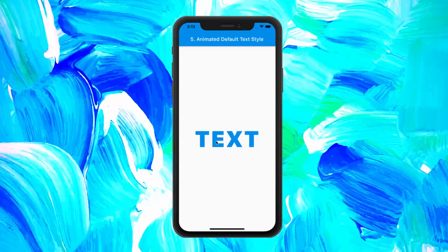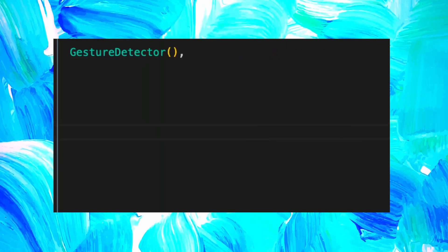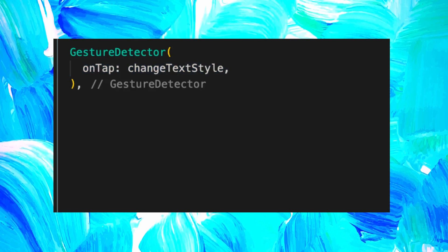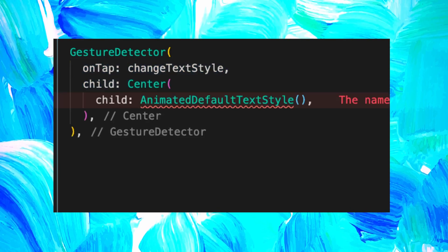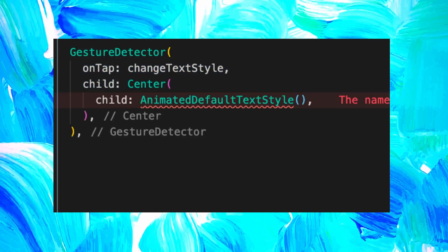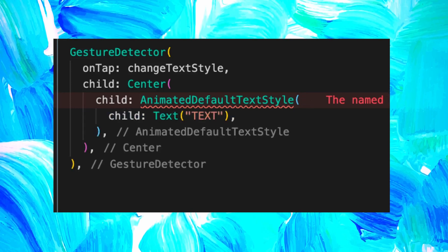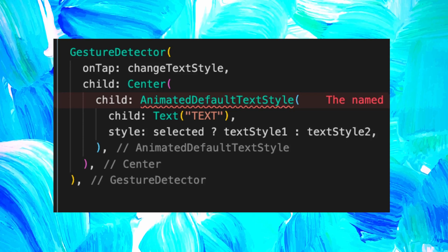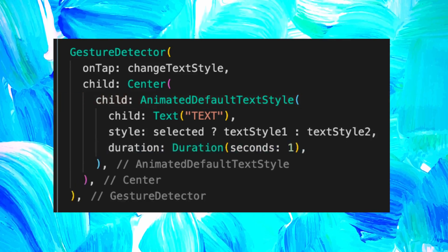Let's dive into the code of the animation. For this one, we will use a gesture detector with the onTap function that will trigger the change of the text style. Inside we will have a center with the AnimatedDefaultTextStyle. Inside this one, we will have the child text and the style that will change every time we click on it. And finally, we add the duration, which is one second.